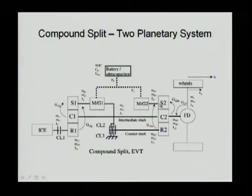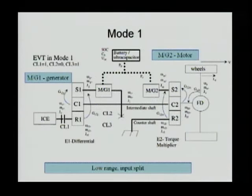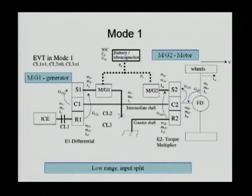The second planetary gear has S2 connected to G2, R2 connected to clutches CL2 and CL3, and C2 connected to the final drive. Clutches CL3 and CL2 can be engaged at two different places. We'll look at what happens when we engage clutch CL3 — CL2 is open, so CL3 will ground R2. Before dynamics, let's look at the steady-state operation.